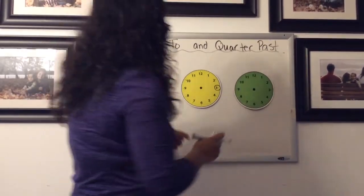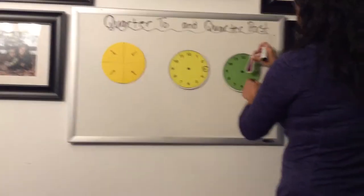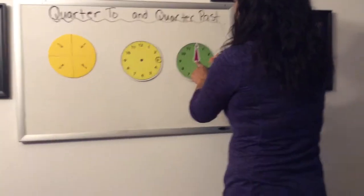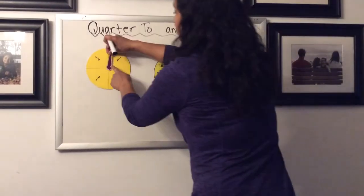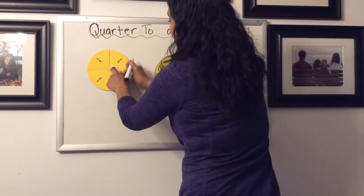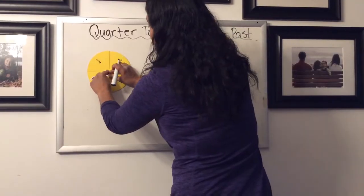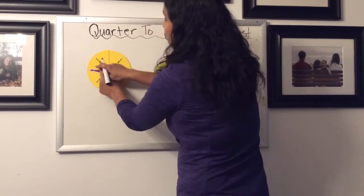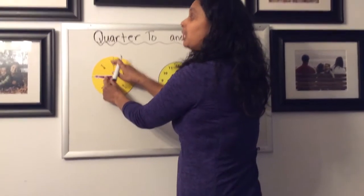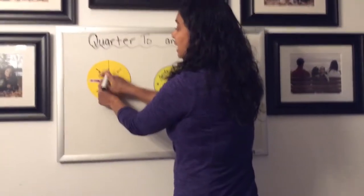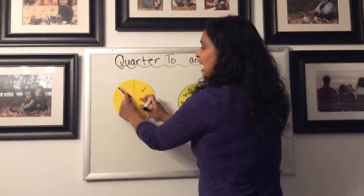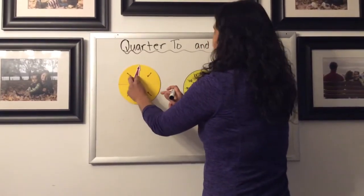Now the quarter to would be if the clock started on the 12 and went all the way around so that we only have one quarter left to the next hour. We can see that there's a quarter of the way to the next hour where it would change to a new hour.